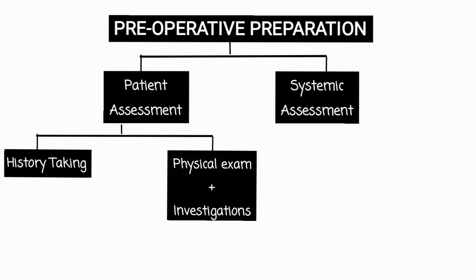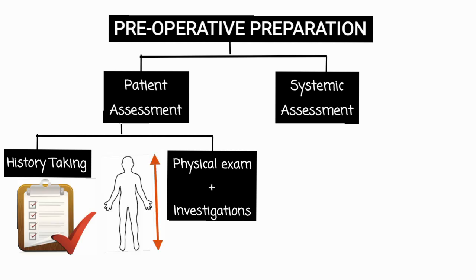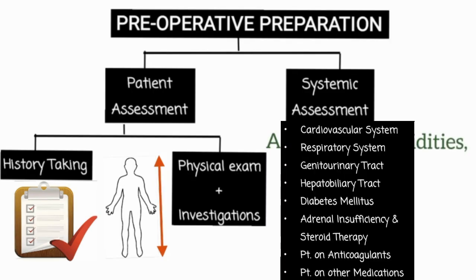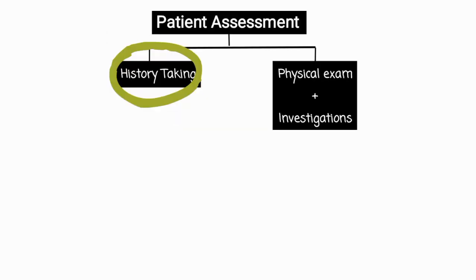Preoperative preparation is divided into patient assessment and systemic assessment. Patient assessment includes history taking and a focused physical exam along with required investigations, whereas systemic assessment is performed to address comorbidities if present. This includes assessment of the cardiovascular system, respiratory system, genitourinary tract, hepatobiliary tract, diabetes mellitus, adrenal insufficiency, steroid therapy, patients on anticoagulants, and patients on other medications.